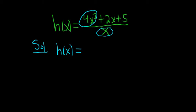So we can write it as 4x³ over x, plus, and then the next one, 2x over x, and then lastly, 5 over x.